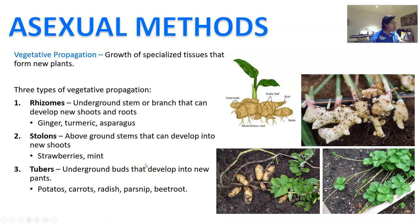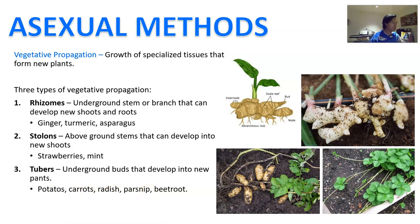Tubers are underground buds that form into new plants — like a storage compartment that can shoot out new plants. Potatoes, carrots, radish, parsnips, and beetroot — all those bulbous vegetables that you and I eat — they're all tubers and they will form new plants. Sometimes you leave a potato too long in the dark and it sprouts off a green bud, and that green bud can easily become a plant if you stick it into the ground.